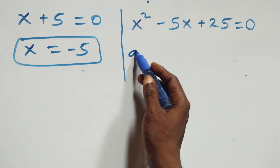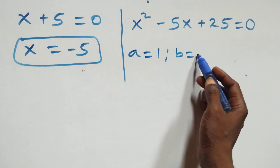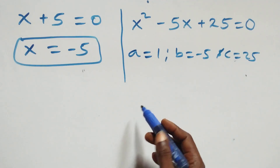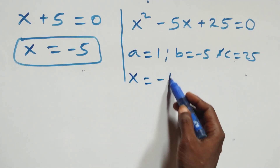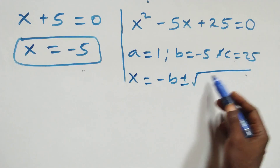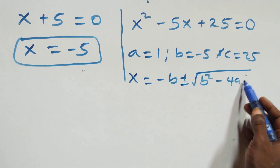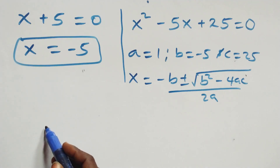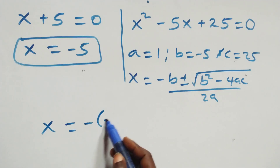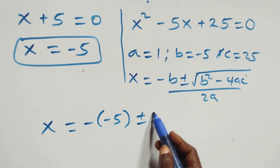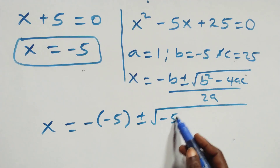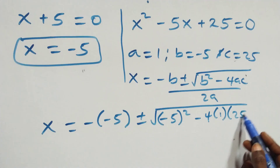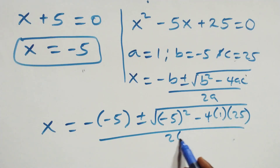For the quadratic equation x squared minus 5x plus 25 equals zero, we have a equals 1, b equals minus 5, and c equals 25. Applying the quadratic formula: x equals minus b plus or minus square root of b squared minus 4ac, over 2. This gives x equals 5 plus or minus square root of minus 5 squared minus 4 times 1 times 25, over 2 times 1.